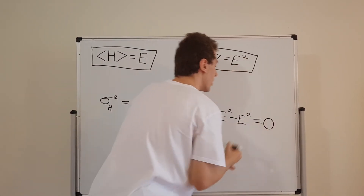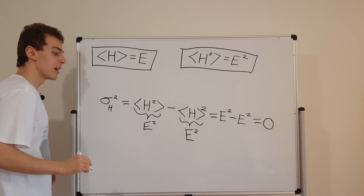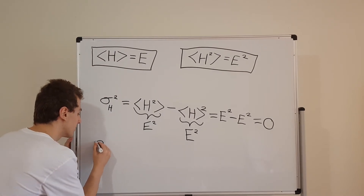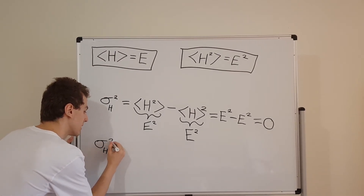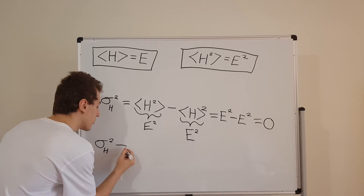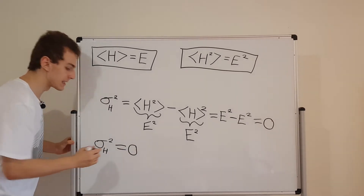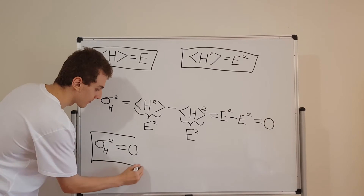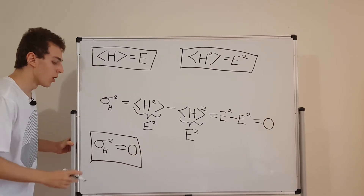So what we're going to get is E squared minus E squared, and that's just equal to zero. So the takeaway message for this video is that the variance of the Hamiltonian — sigma squared — is equal to zero for a stationary state.